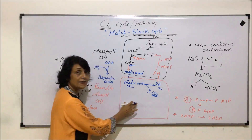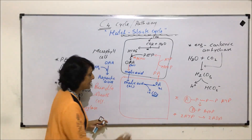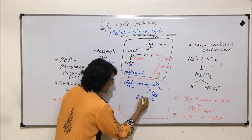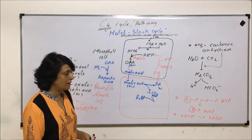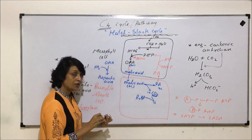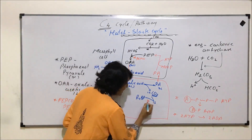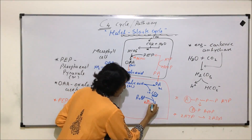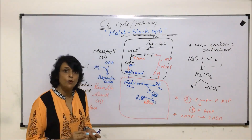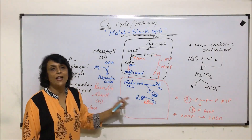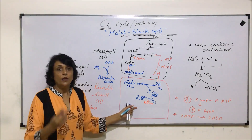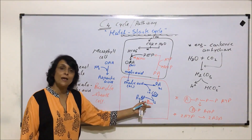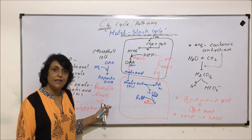What is happening in the bundle sheath now is that carbon dioxide is released. This carbon dioxide will be accepted by RuBP — ribulose bisphosphate. The enzyme required for this is Rubisco. In these bundle sheath cells, Rubisco would act as a carboxylase, because the two conditions in which Rubisco's behavior changed from carboxylase to oxygenase have been taken care of.